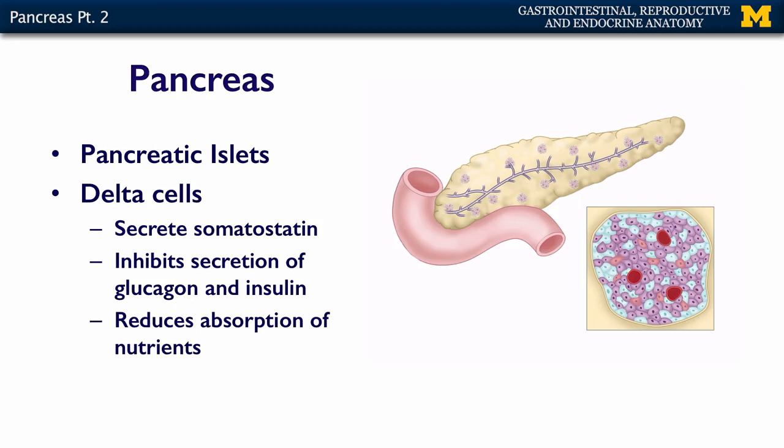Delta cells, another cell type within the pancreatic islet, secrete somatostatin. This is a little bit different than the somatostatin secreted by the hypothalamus that regulates growth hormone in the anterior pituitary. This somatostatin — it's the same peptide, but it's secreted under different circumstances and from a different cell type. It inhibits the secretion of glucagon and insulin, and also reduces the absorption of nutrients from the gut.